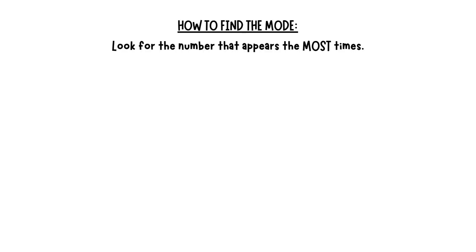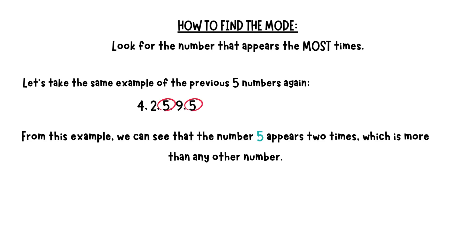You need to look for the number that appears the most times. Let's take the same example of the previous five numbers again. From this example, we can see that the number five appears two times, which is more than any other number, so the mode is 5.